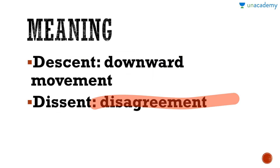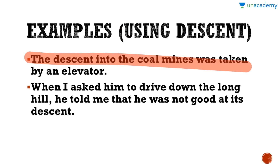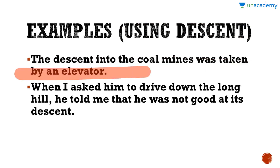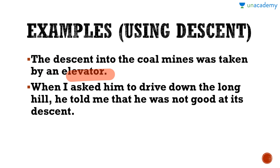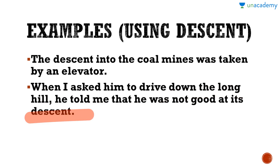We will first discuss the meaning of DESCENT and DISSENT. DESCENT means downward motion. For example: the descent into the coal mines was taken by an elevator, which is a device also known as a lift. Secondly, when I asked him to drive down the long hill, he told me that he was not good at driving in a downward motion.